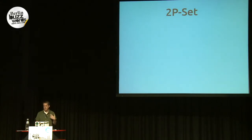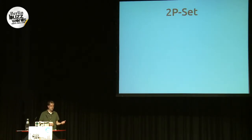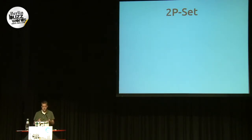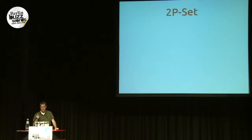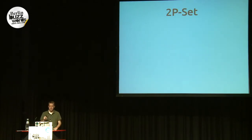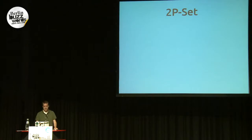The second type of set is a 2P-set or two-phase set. Similar to the PN-counter, it's made up of two grow-only G-sets: one for adds and one for removes. Once something has been removed, you can't add it again — the remove set acts as what we call a tombstone set; this item is dead, it's no longer part of the set. To prevent spurious states where you might remove something before it was added, this data type has a precondition on the local update that you can't remove something not already in the add set. Since removes commute with each other and adds commute with each other, it basically converges.